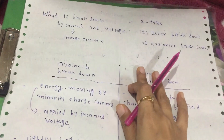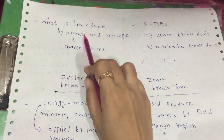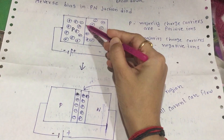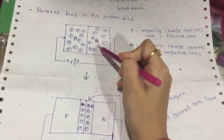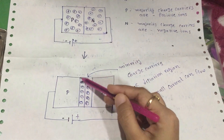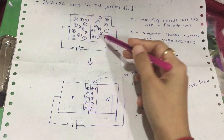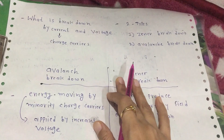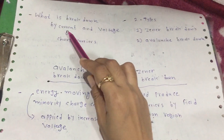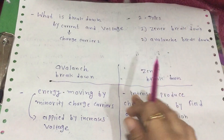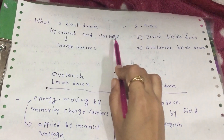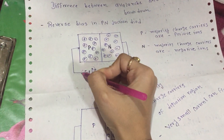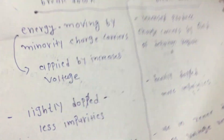Now, what is breakdown? Breakdown occurs at the junction which connects the P-type and N-type material, and it breaks down based on the depletion region. Breakdown can occur by voltage or current — current means the charge carriers, which are electrons and holes, and voltage means increasing the voltage from the battery connected to the PN junction diode.